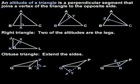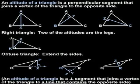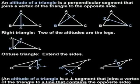Since an altitude is not always located on the inside of a triangle, a more complete definition of an altitude of a triangle is a perpendicular segment that joins a vertex of the triangle to a line that contains the opposite side.